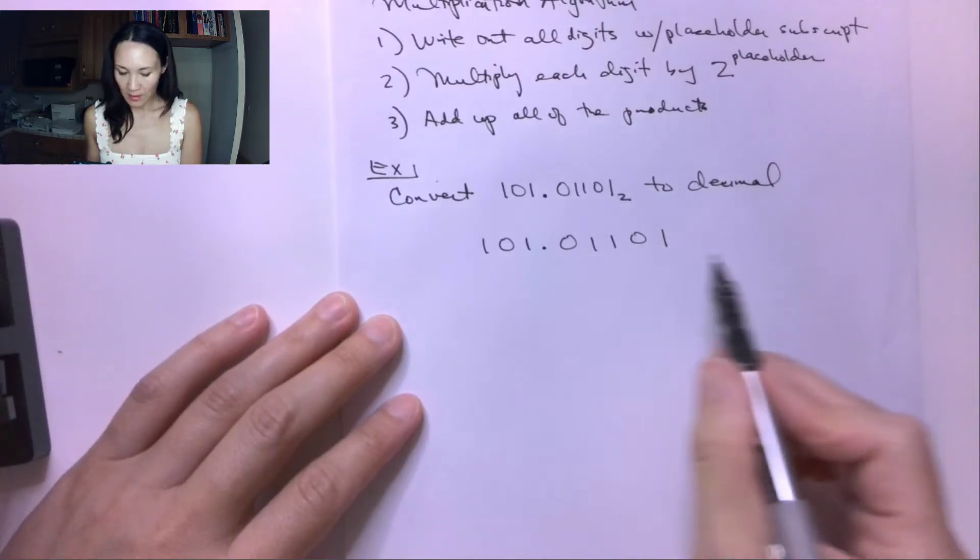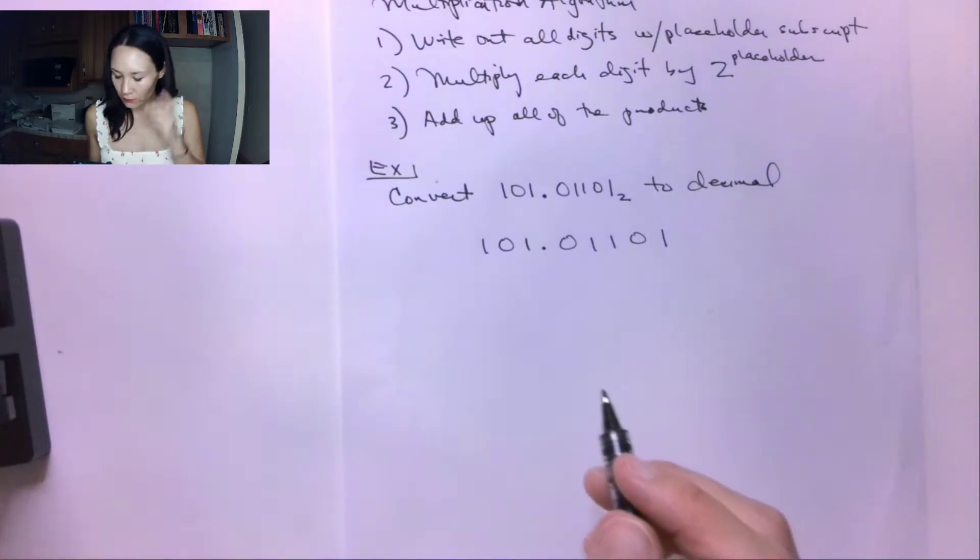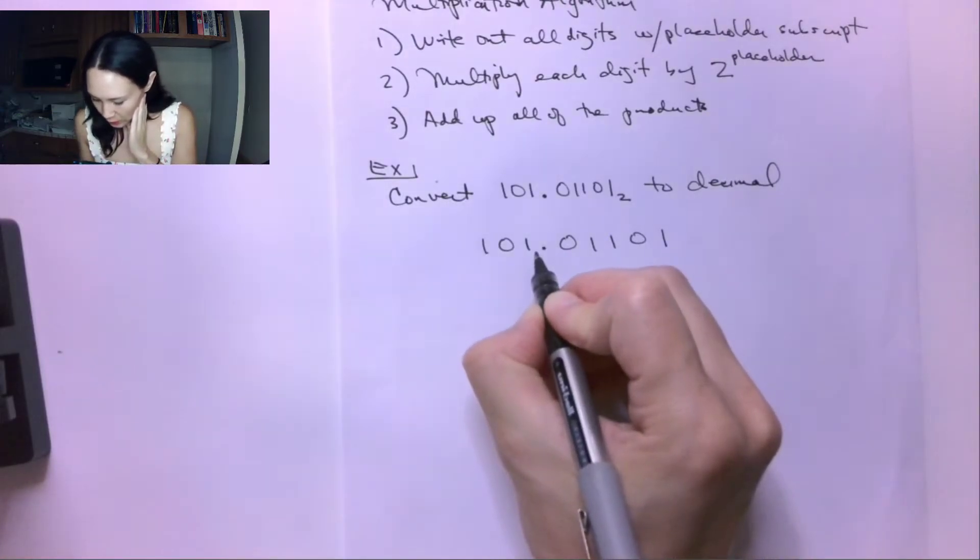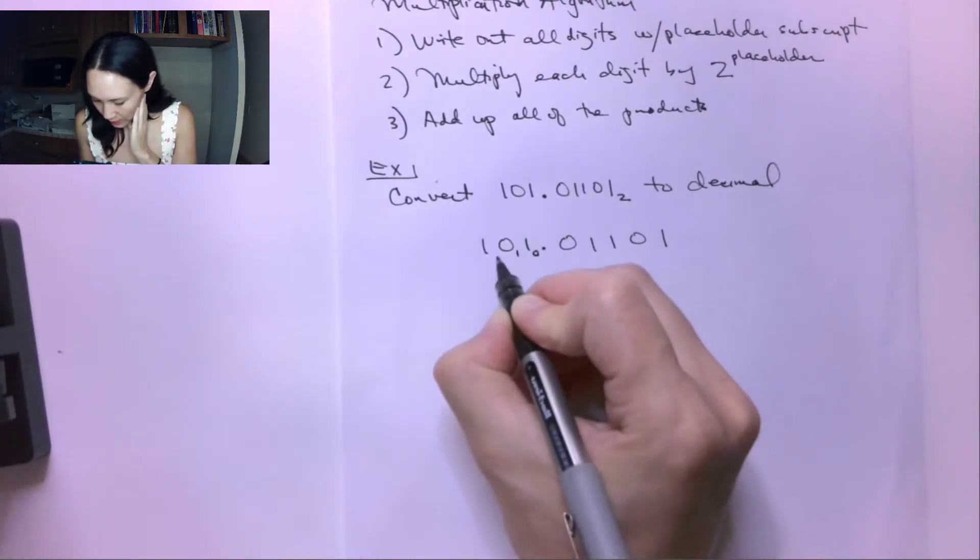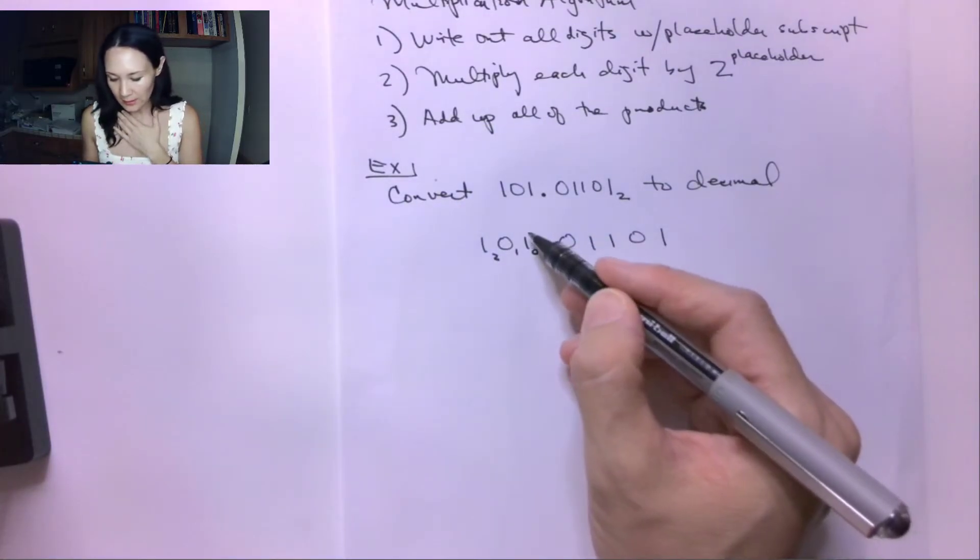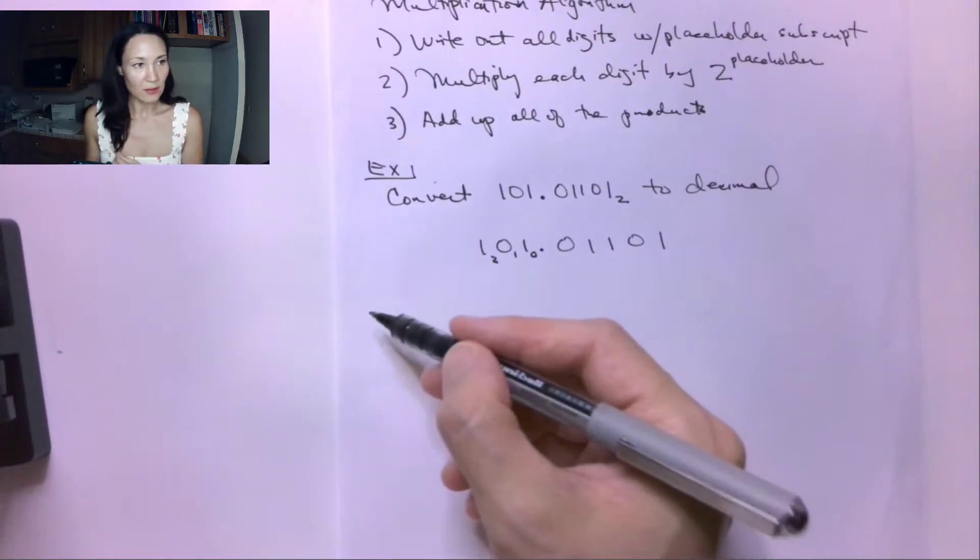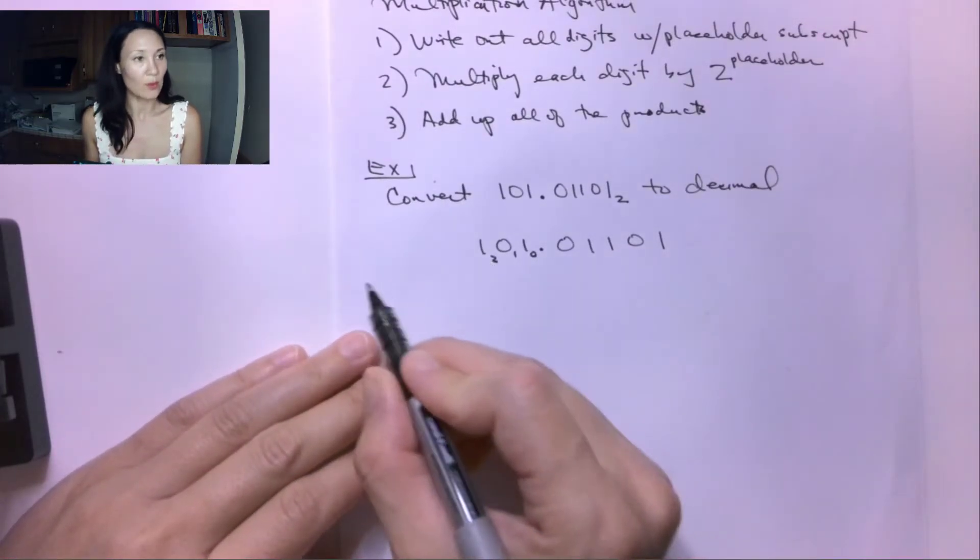Now I'm going to put my placeholder subscripts. Previously when we converted from binary to decimal, we just put a 0 here, a 1, and a 2, and we get larger as we go to the left. This is the least significant bit, this gets the 0. As we go to the left, our placeholder subscripts get larger.